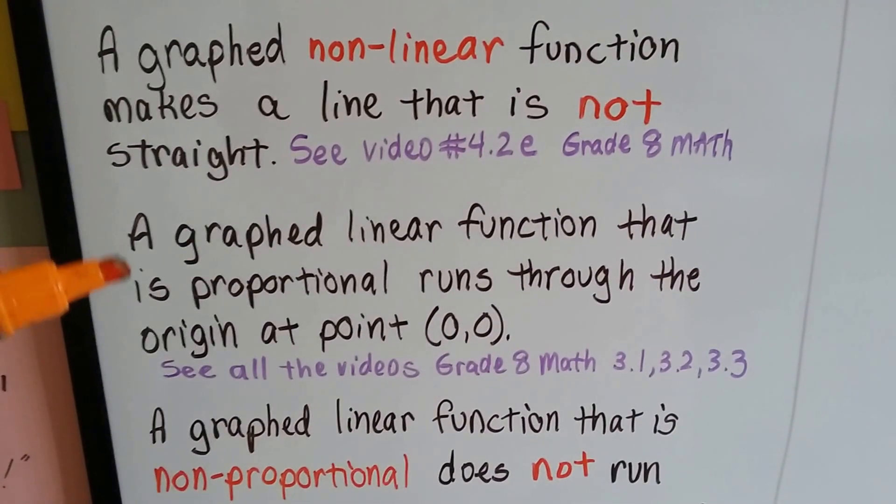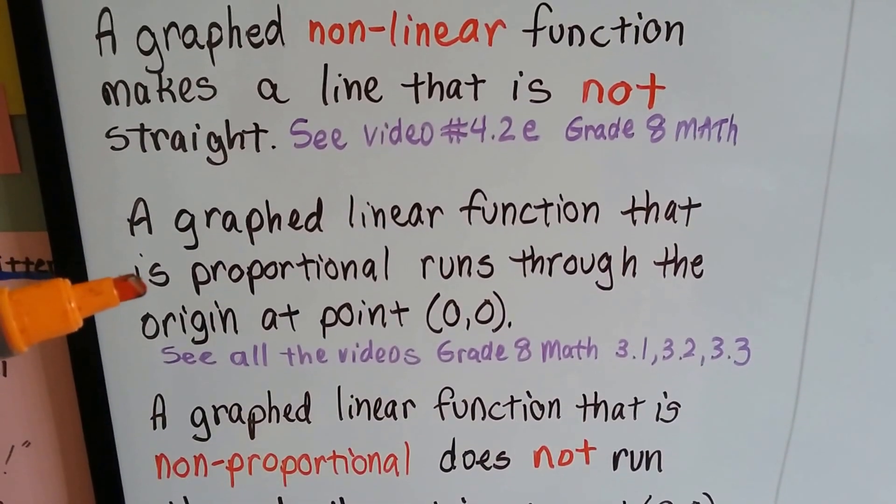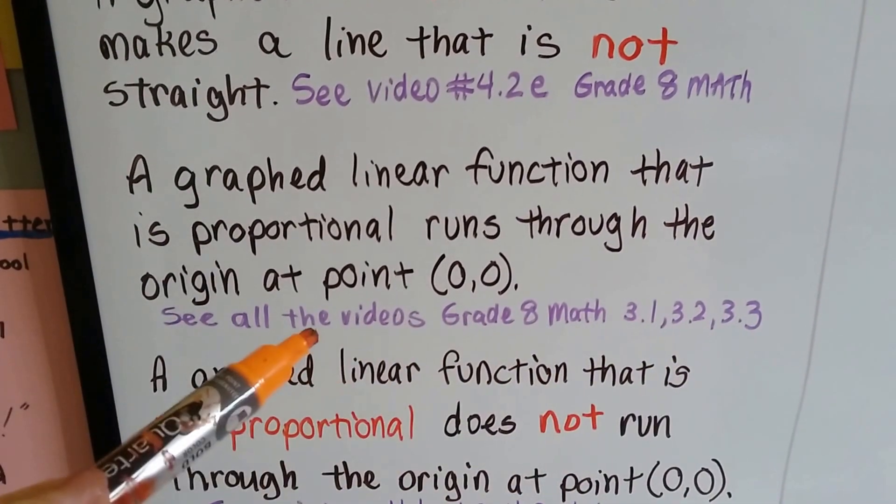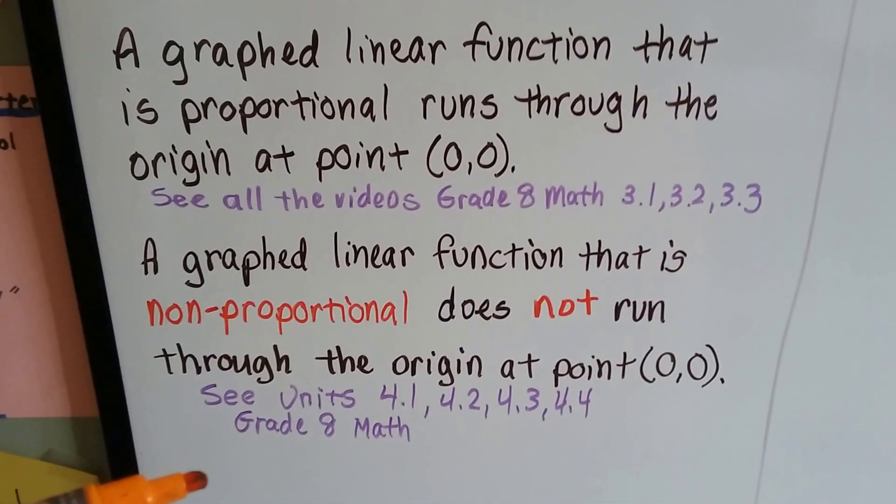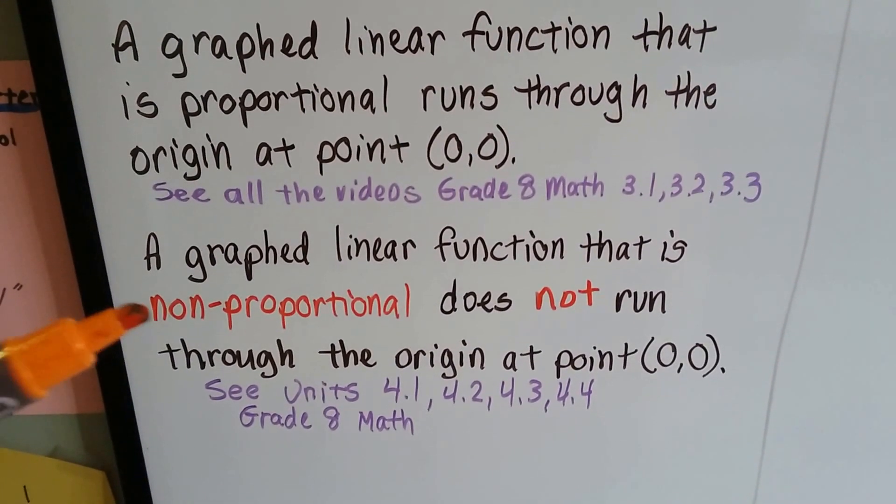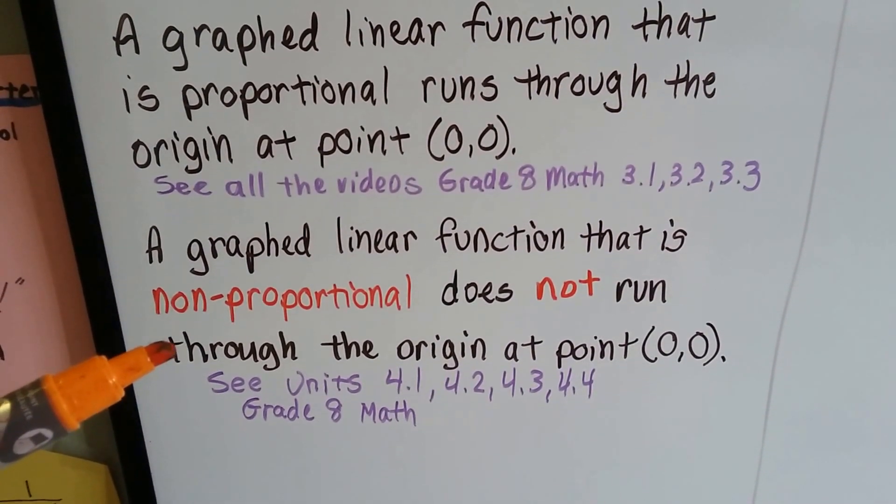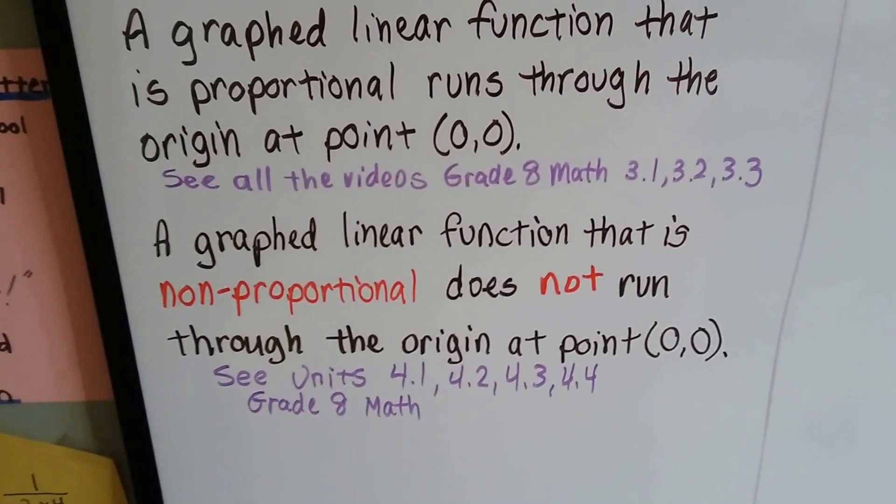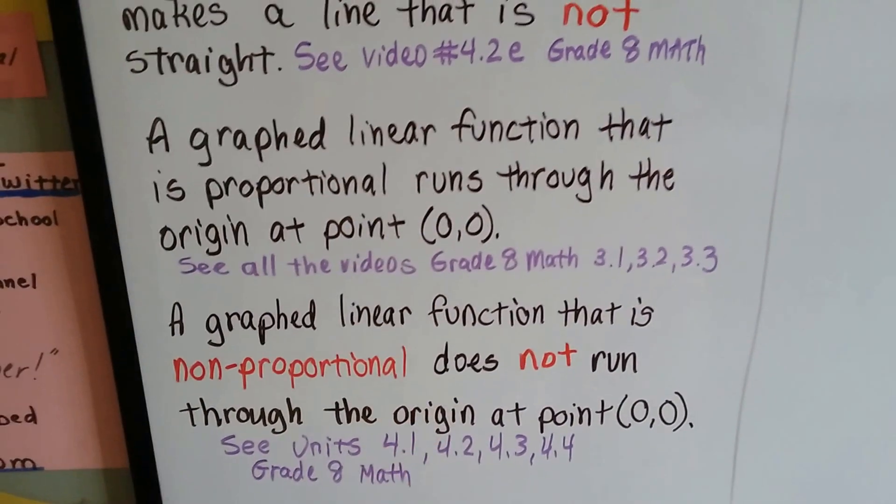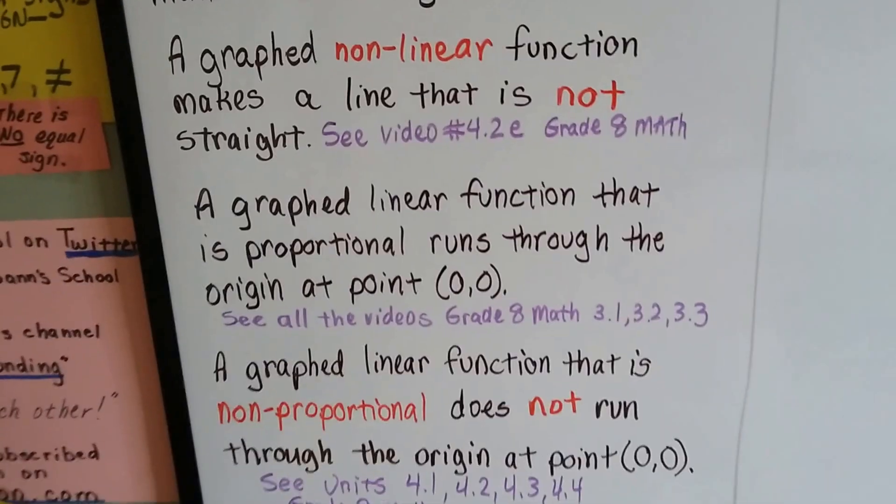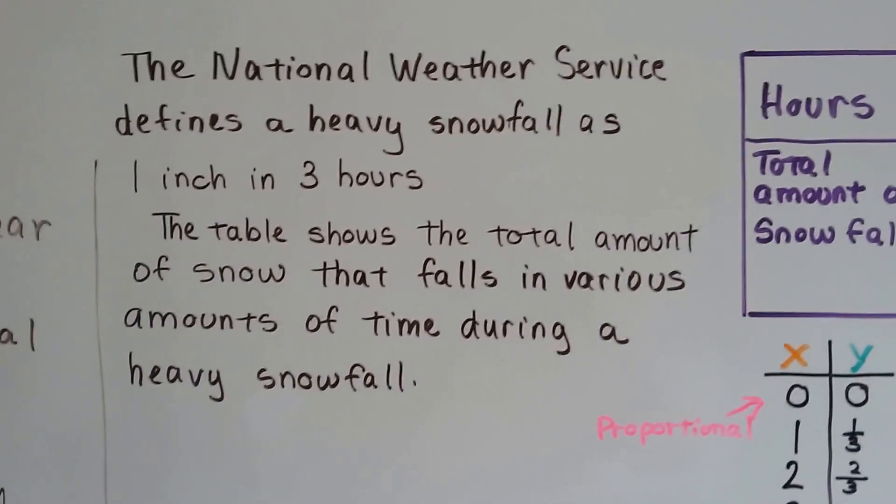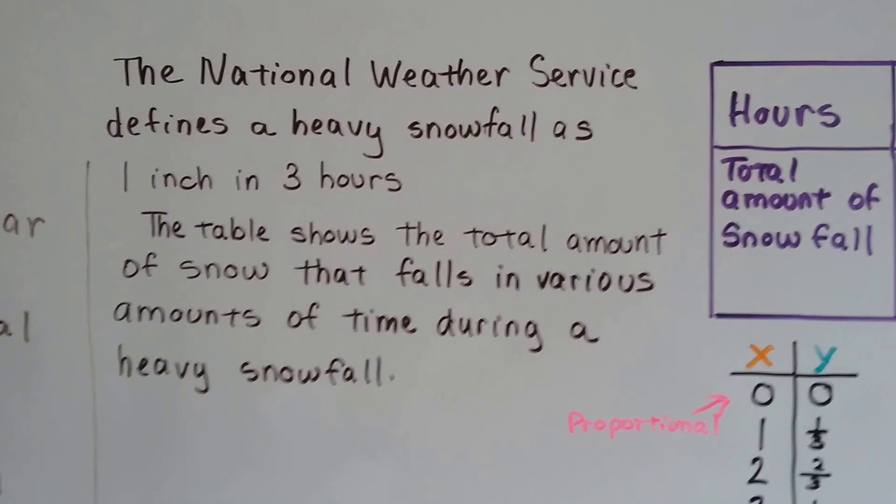A graphed linear function that is proportional runs through the origin at point (0,0). Here's the videos for that topic. And a graphed linear function that is nonproportional does not run through the origin at point (0,0). And these are the videos for that topic. If you haven't seen these and you're very confused what all of this means, you've gotten ahead of yourself. You need to go back and watch those and then come back to this.